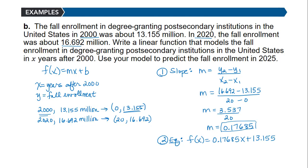For the last part, we want to predict the fall enrollment in 2025, assuming this type of growth continues. Based on this growth, we can make projections. How many years is 2025 after 2000? So I have to find f(25), which is 0.17685 times 25 plus 13.155. Rounding to the nearest thousandth, that's 17.576. This tells us that in 2025, the fall enrollment would be about 17.576 million.